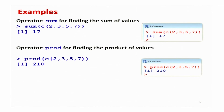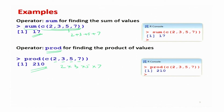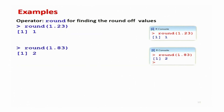To find the sum of values, for example sum of c(2, 3, 5, 7), the result is 17, since 2+3+5+7=17. For product, prod of c(2, 3, 5, 7) gives 210. For rounding: round(1.23) gives 1 since 1.23 is less than 1.5, while round(1.83) gives 2 since 1.83 is greater than 1.5. These operations are very simple and easy to use.